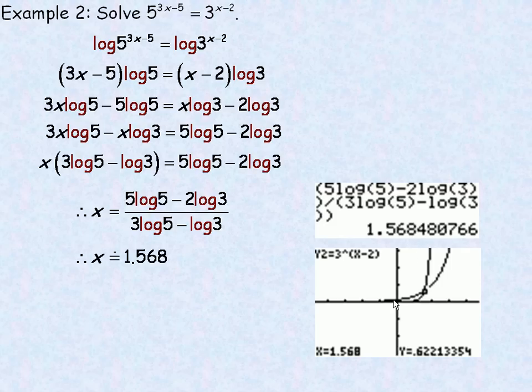The graph that's shown in the bottom here, I've actually graphed both of these: y equals 5 to the 3x minus 5, and y equals 3 to the x minus 2. And so what we're actually trying to find there is the x coordinate of the point they have in common. So that's the graphical interpretation here. If I find where those two graphs intersect, notice that the x coordinate is the same as what I have here. So that's actually the x coordinate of the point where those two graphs intersect.